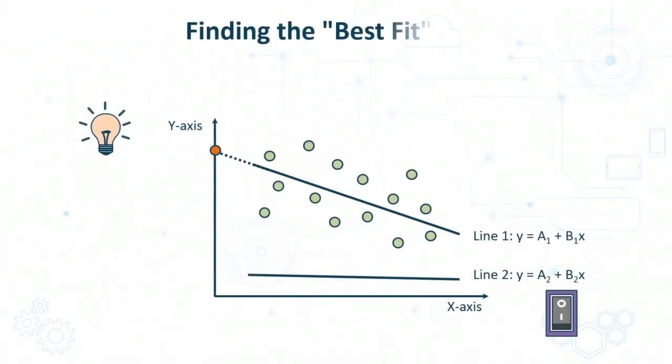But how exactly do we determine this best fit straight line? Well, there is a mathematical way to solve this problem. For that, consider two different straight lines, which are represented by the equations y = a1 + b1x, which is the first straight line you see on the top over here, and then there is a second straight line, which is the horizontal one at the bottom. Intuitively, you will know that it is the first straight line which represents a better fit than the second one. But how exactly can we quantify this?